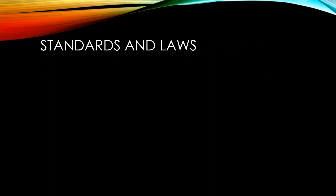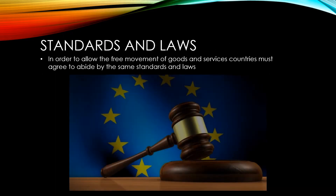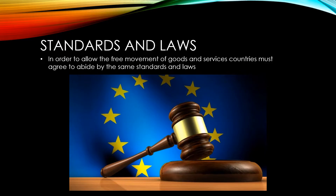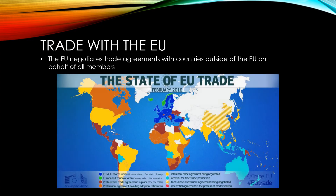In order to allow the free movement of goods and services between countries in the EU, they must all agree to abide by the same standards and laws. These affect things like product safety standards. The EU also negotiates trade agreements with countries outside of the EU on behalf of all of its members, and all members must abide by these agreements.